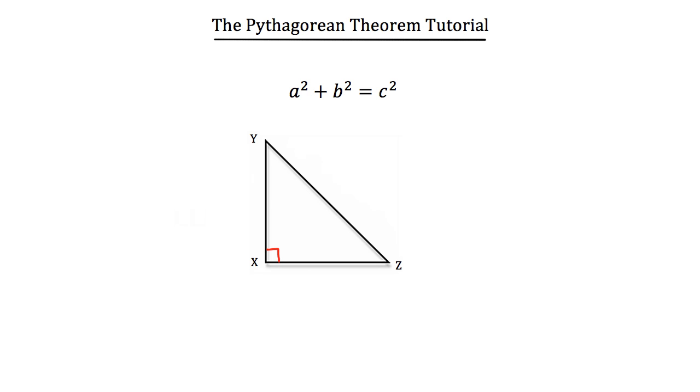It helps you solve for any missing side of a right triangle. So let's take this right triangle that we've drawn in, triangle XYZ. The a, the b, and the c respectively stand for the legs and hypotenuse of a right triangle.